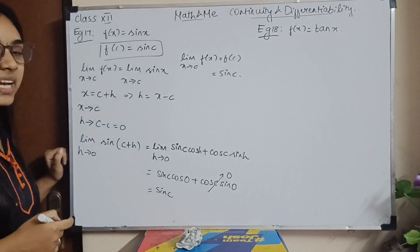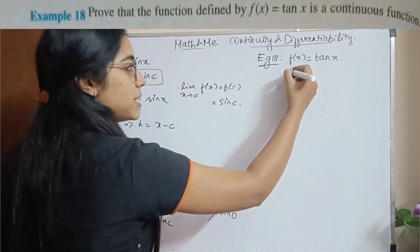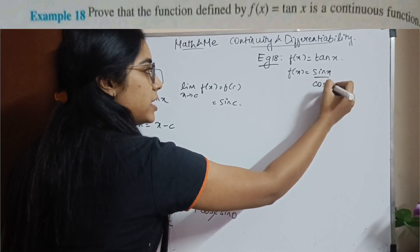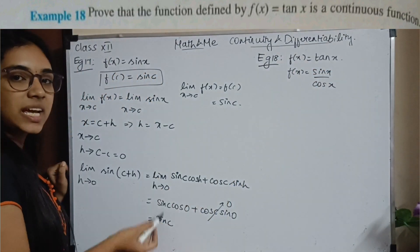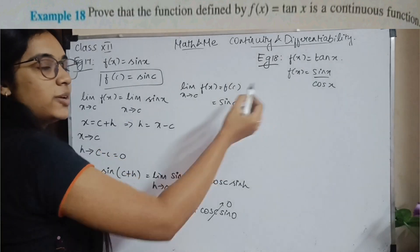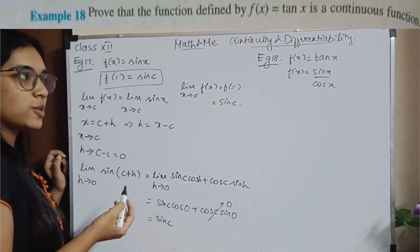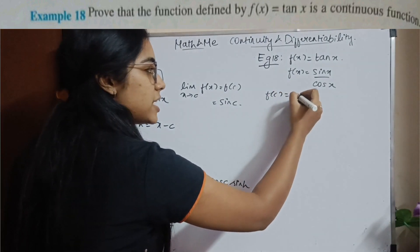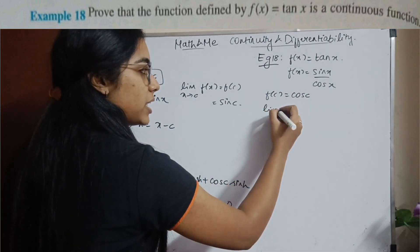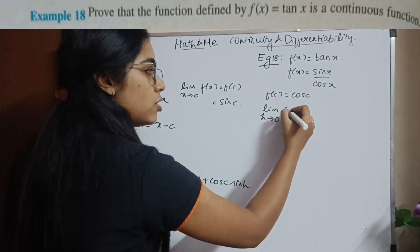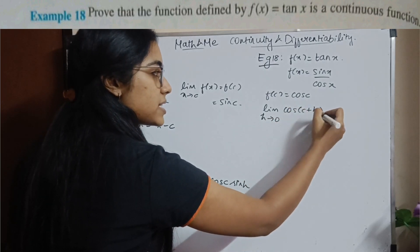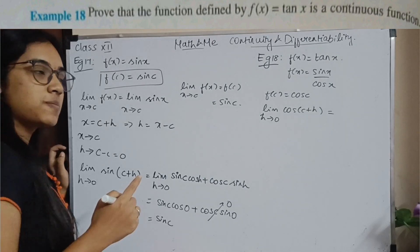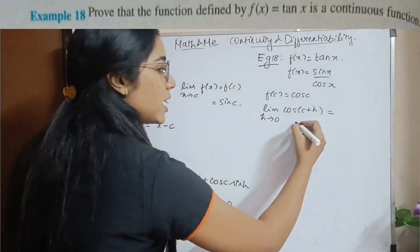Moving on to Example 18: tan X. Since f(X) = sin X / cos X, and we just proved sin X is continuous, similarly we can prove cos X is also continuous. For that proof: f(C) = cos C, and the limit as H tends to 0 of cos(C + H) uses the identity cos(A + B) = cos A cos B − sin A sin B.